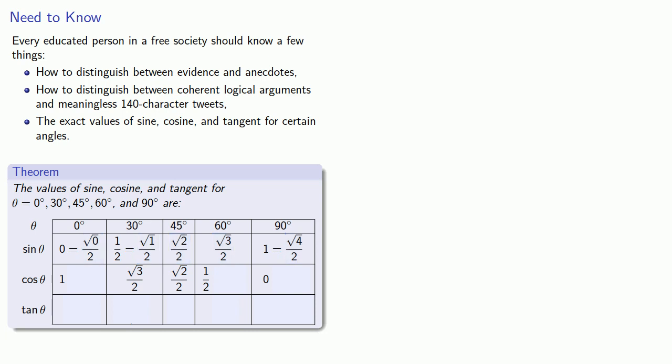And our cosine values go in the opposite direction: square roots of 4, 3, 2, 1, and 0 over 2.